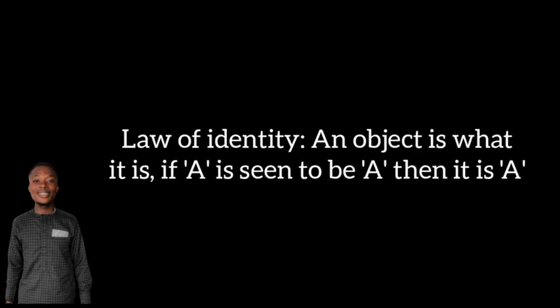In the laws of thought there are three main laws. The first is the law of identity, which states that an object is what it is. For example, if you see that it is raining and you look outside and it is actually raining, that is the law of identity — the object is what it is.